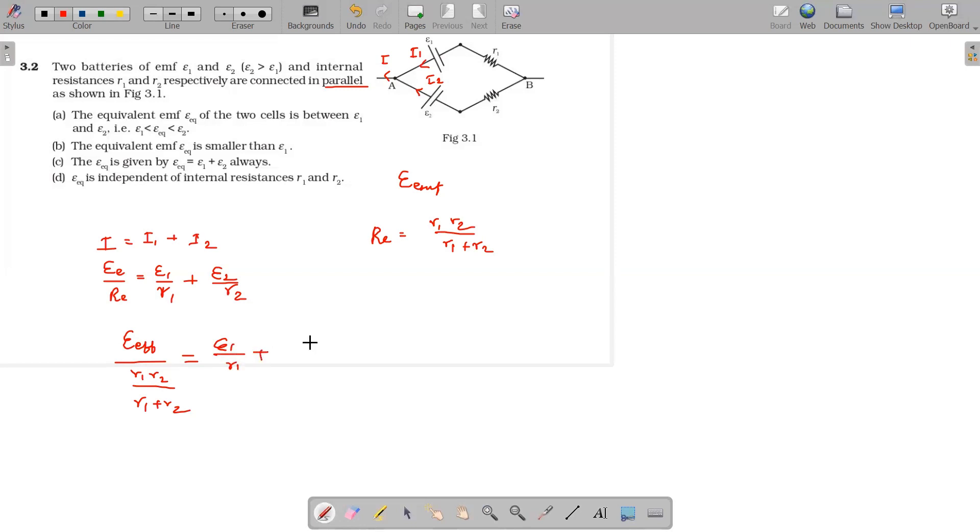Are you clear at this step? Which is equal to e1 by r1 plus EMF of the second cell by r1 by r2 by r1 by r2.